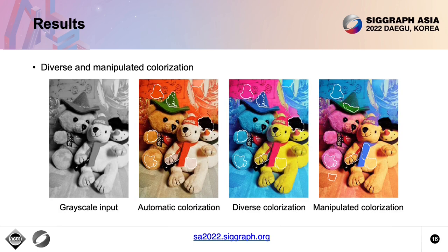Thanks to the anchor-based color representation, we can control the colorization by manipulating the anchors. Besides automatic colorization, we can get diverse results by sampling different colors on the anchors. We can even add or remove the automatically predicted anchors to achieve more preferred results.